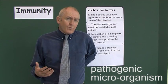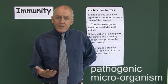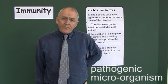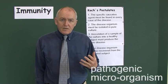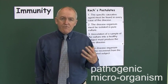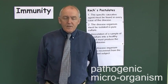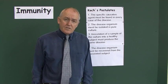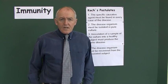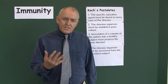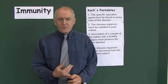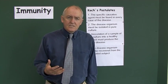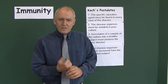In hospital, if someone is developing severe sepsis, we do blood cultures — we take the blood and see if bacteria are growing in it. These days we can also do the same with viruses, though it's harder to culture viruses. So the first postulate is: if the disease is genuinely caused by an infectious organism, we should be able to identify that organism in the lesions of the case.